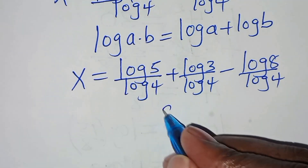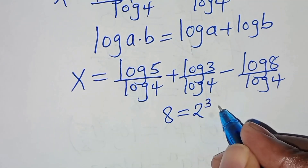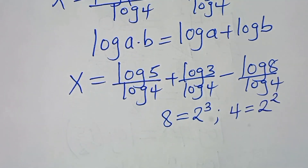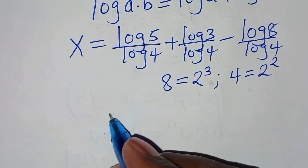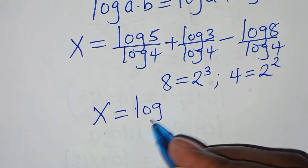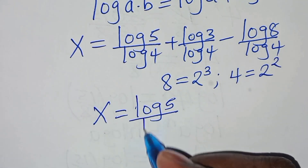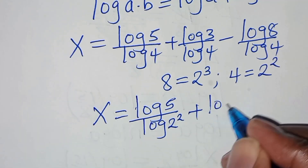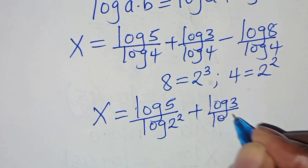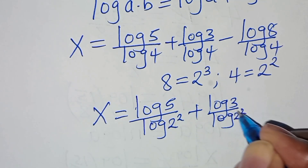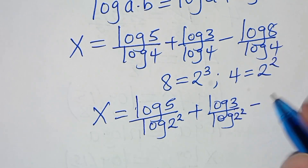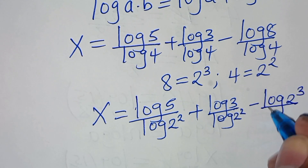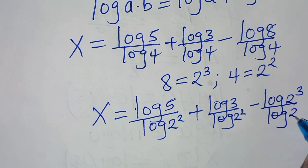The next step: we can express 8 as 2 to the power 3, and 4 as 2 to the power 2. So substituting, x equals log 5 divided by log(2²), plus log 3 divided by log(2²), subtract log(2³) divided by log(2²).